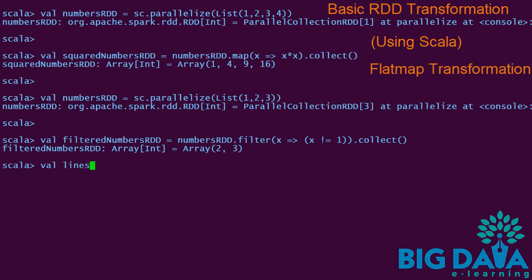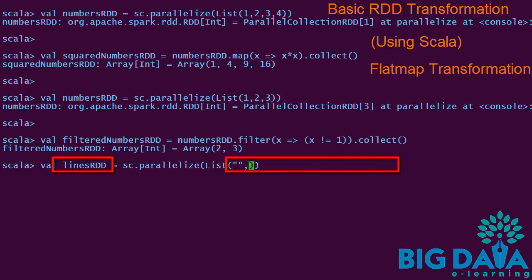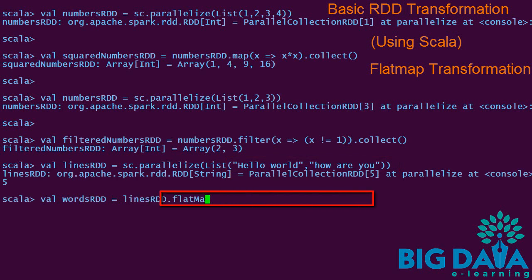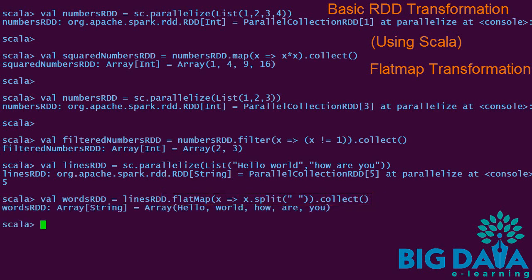Let's try flat map transformation to split the strings into individual words. We create a lines RDD containing two strings: "Hello world" and "how are you". We apply flat map transformation to it, passing a function to split strings based on spaces as the delimiter. Flat map transformation applies the split function to each string element in the RDD. The resultant words RDD contains the complete list of elements separated by commas.